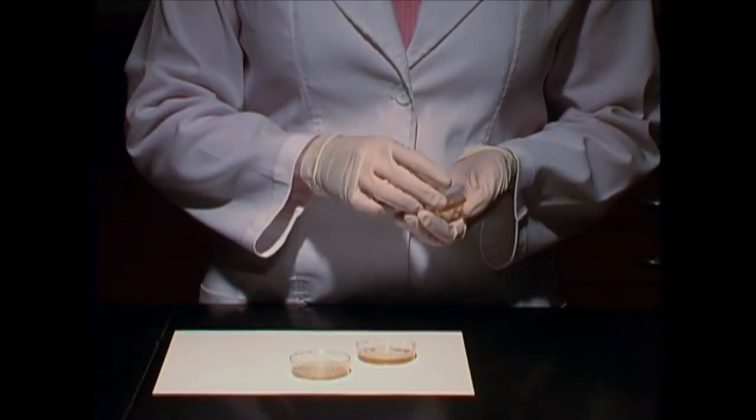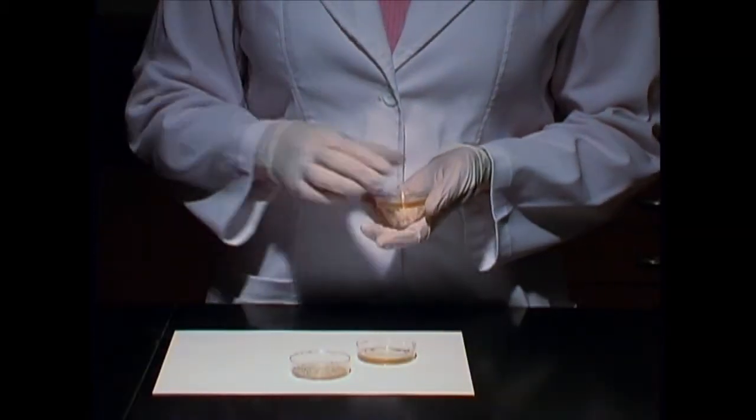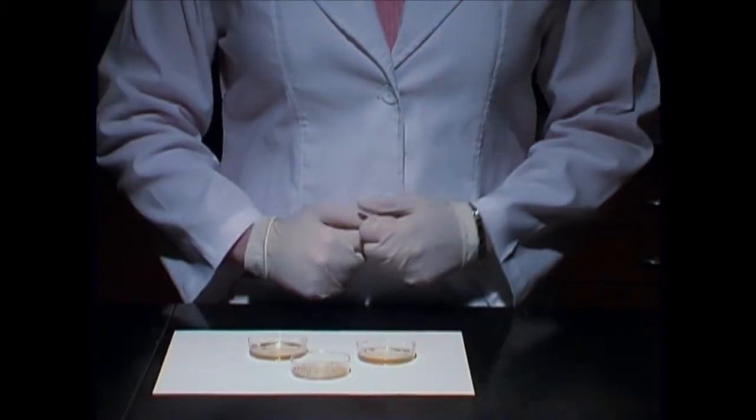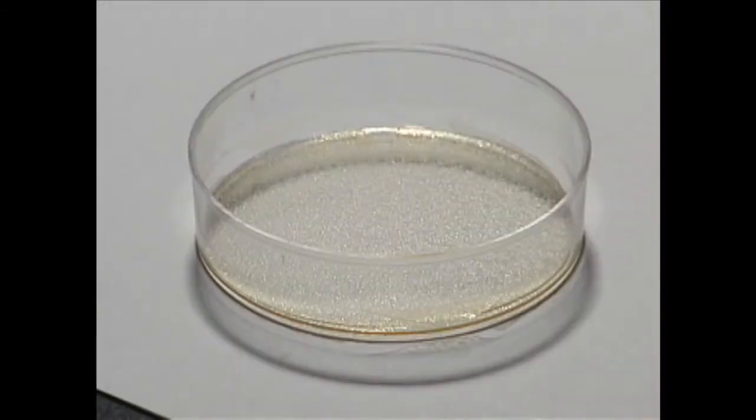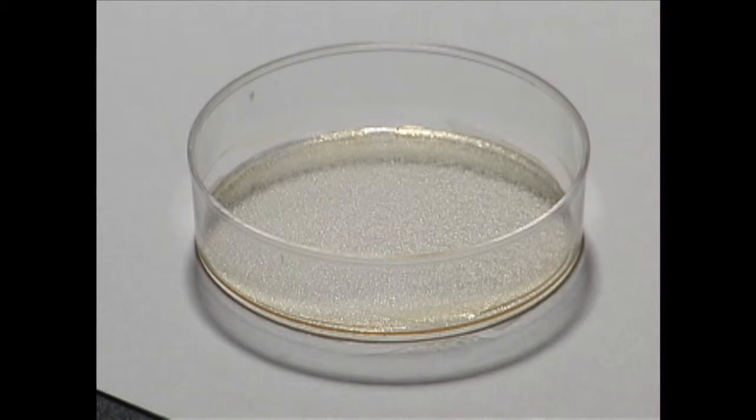Each plate should produce a different result. Control-1 was not exposed to the PUC8 plasmid. Its agar was infused with the inducer IPTG and the substrate X-gal, but in the absence of PUC8, they will have had no effect. After incubation, the competent cells should have freely reproduced and may look like a smeared layer or a lawn of white cells.